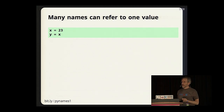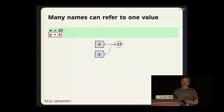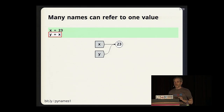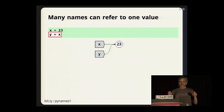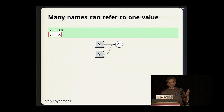Many names can refer to one value. Once we've assigned `x = 23`, we can also say `y = x`. Note that when we say `y = x`, y is not referring to x—y is referring to the value that x refers to. So y and x are both names for the 23. Neither one of them is the real name; they are both equally valid names for the 23. Any value can be referred to by as many names as we'd like.